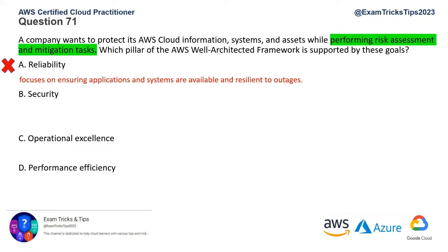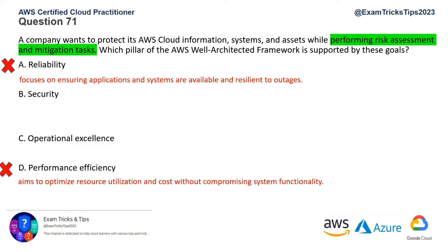Performance efficiency, option D - this is about when you run your application, is it optimizing the resource utilization and cost without compromising the functionality? That's not what this question is asking. We are looking at the pillar related to risk assessment and mitigation. So this one is also gone. Option C, operational excellence - this is for prioritizing streamlined processes for managing and operating workloads. This is not about risk mitigation and risk assessment, so this is also wrong.